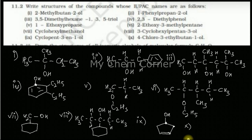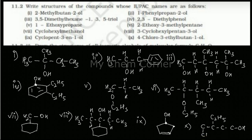The tenth one is 4-chloro-3-ethylbutane-1-ol. The parent hydrocarbon is butane-1-ol, so draw a four-carbon chain with OH at carbon 1. At carbon 3 place an ethyl group, and at carbon 4 place a Cl atom. All groups are now placed, so fill in the hydrogens — giving CH2, CH, and H — and that completes the tenth structure.